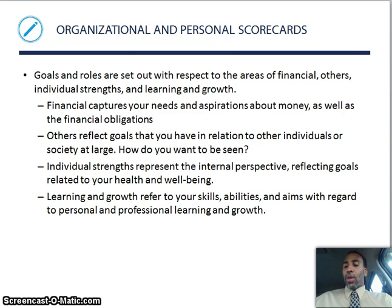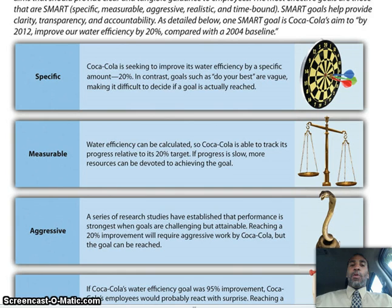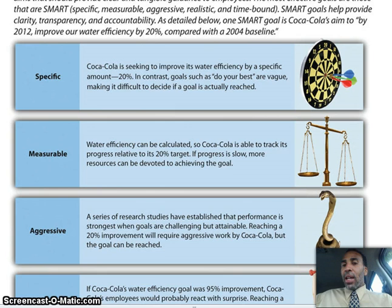Now, creating SMART goals. If you remember, I referenced what a SMART goal was a little bit earlier — well, this is it. Specific: Coca-Cola is seeking to improve its water efficiency by a specific amount, 20%. That's very specific. In contrast, goals such as 'do your best' are vague, making it difficult to decide if a goal is actually achieved or reached.